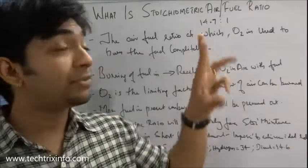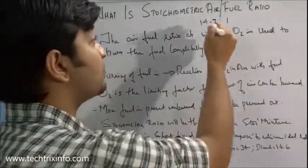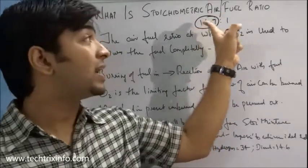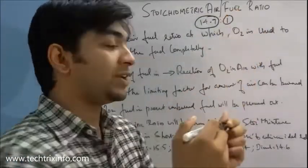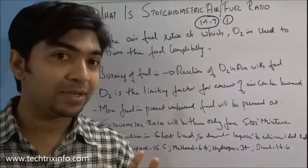So there it comes into play air fuel ratio. In gasoline, if we use as a fuel, the air fuel ratio is 14.7 is to 1. That is 14.7 kilogram of air for the ideal combustion of 1 kilogram of gasoline.